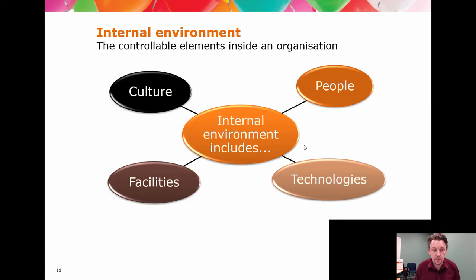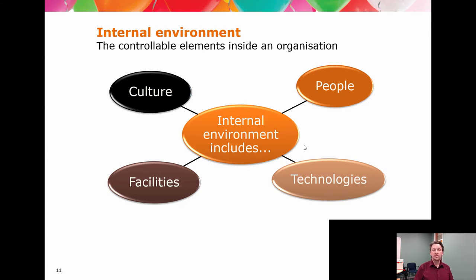Starting with the internal environment: we're documenting what it is. People — who do we currently have. Culture — what's the organization like, is it innovative or conservative? Facilities — what do we have in terms of production capacity and capability? Technologies — what tech do we have, what do we need, and what are we developing? Given our mission statement, do we have the right people, do we need more, can we upskill? If the mission statement uses words like innovation but the organizational culture is risk averse, then we have a mismatch that becomes a weakness.